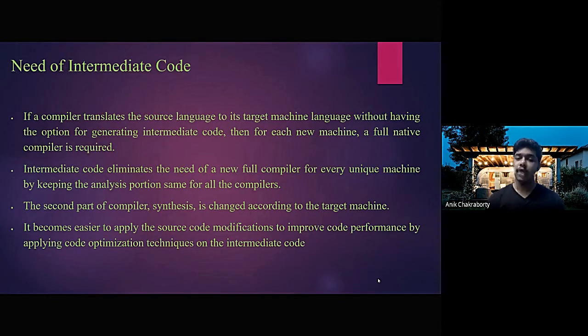Intermediate code eliminates the need of a new compiler for every single unique machine by keeping the analysis portion same for all the compilers. The second part of compiler synthesis is changed according to the target machine.